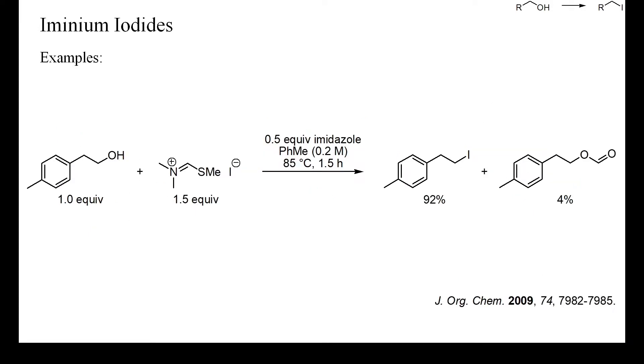Only few examples have been reported of the use of iminium iodides as deoxyiodinating reagents. The main reason for this is that iminium iodides are not easy to prepare. Thionyl iodide or carbonyl iodide are not readily available, and sodium iodide is only well-soluble in acetone but not in the less reactive solvents required for the preparation of iminium halides.